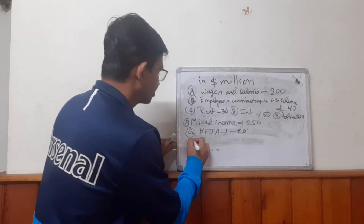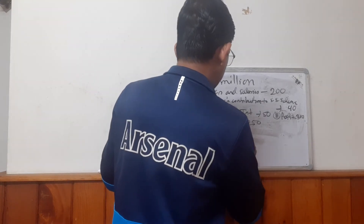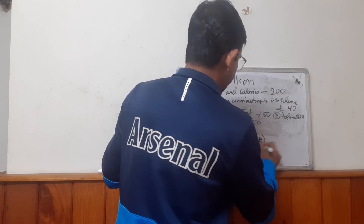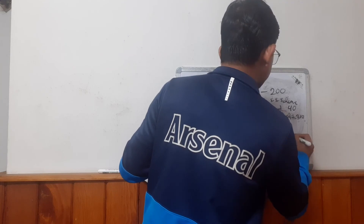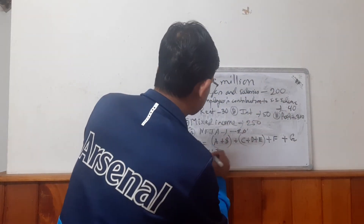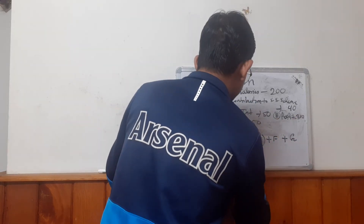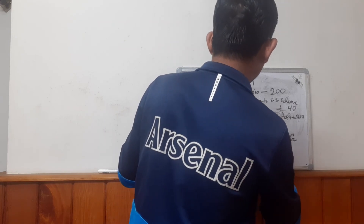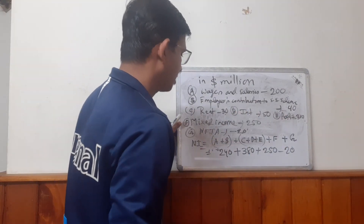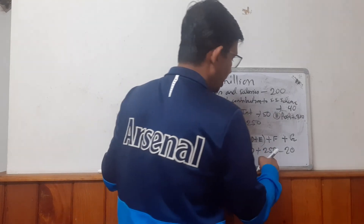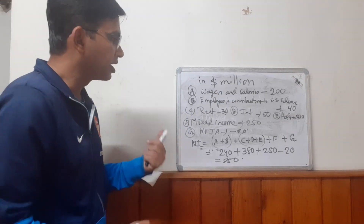National income equals compensation to employees (A plus B = 200 + 40 = 240), plus operating surplus (rent 30 + interest 50 + profit 300 = 380), plus mixed income of self-employed (250), plus net factor income from abroad (minus 20). So national income = 240 + 380 + 250 − 20 = 850 dollar million. This is how we calculate national income in the income method.